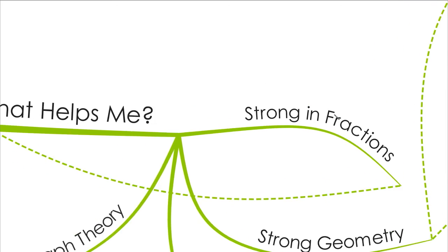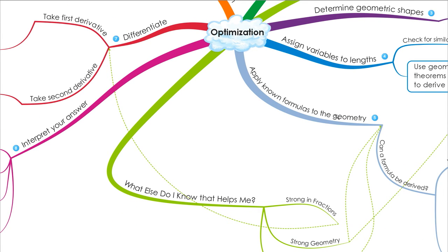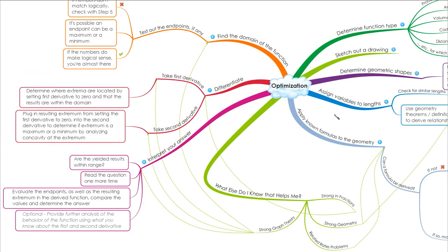Being strong in fractions is important — when you're differentiating, you can end up with large, complex fractions, so being able to manipulate them makes the differentiation process a lot easier. Strong graph theory is also key: understanding the relationship between the first derivative, second derivative, and the original function; knowing the domain; and being able to visualize a point moving along the curve as x increases — all while tracking what the figure looks like.